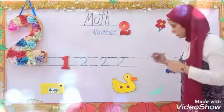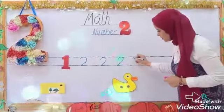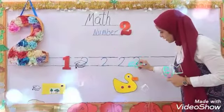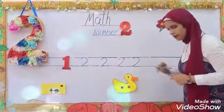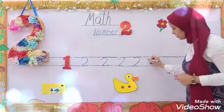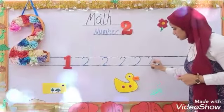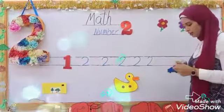Write number two. Curve slash sleeping line. Again, curve slash sleeping line. Okay.